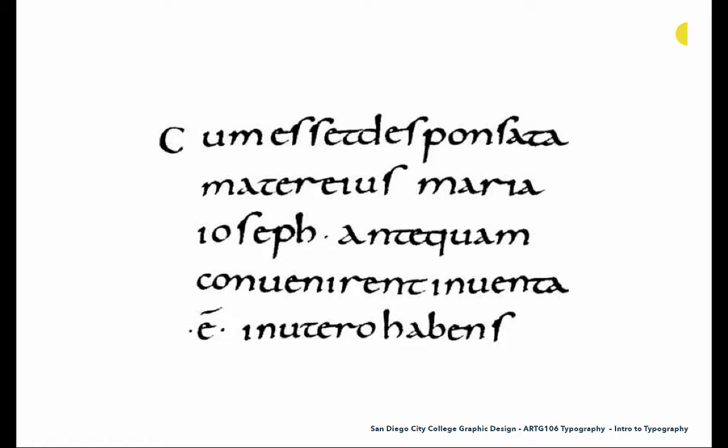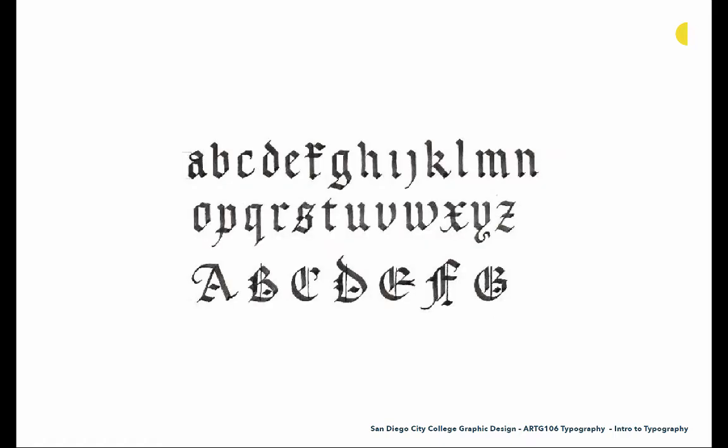Then we get to Carolingian minuscule, and this is really pushed by the rule of Charlemagne. This was a type of writing that was extremely popular, and once the church and Charlemagne backed it, it had an incredible reach. Through trends, we eventually see Gothic minuscule, which really followed the rest of the Gothic tradition and eventually was the basis for the typography we saw in the Gutenberg Bible.